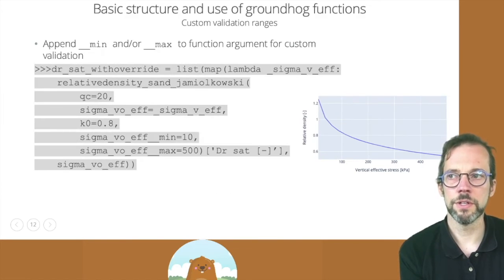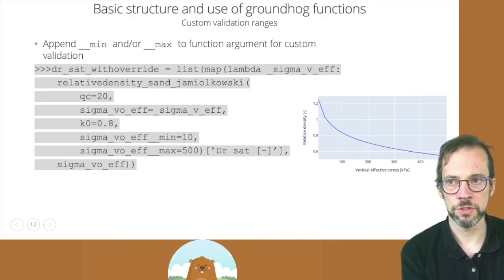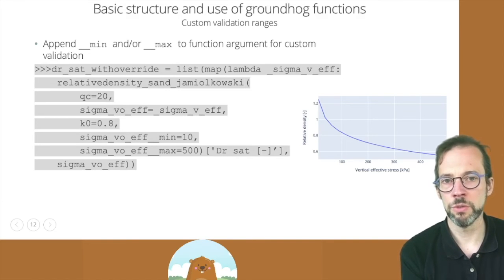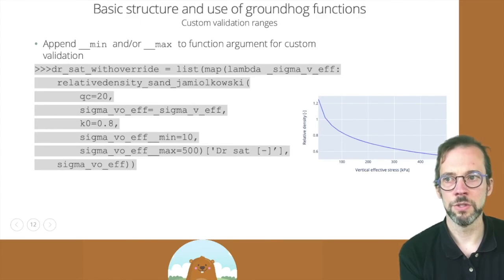If we want to customize the validation ranges, we can always append a double underscore min or double underscore max argument to our function call. This happens in this code example, where we were going to relax the validation range to 10 to 500 kPa.